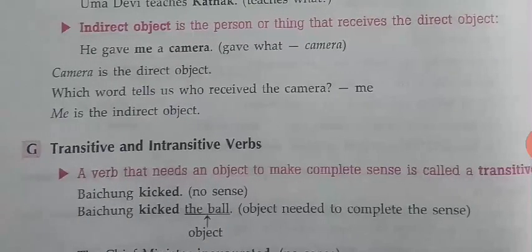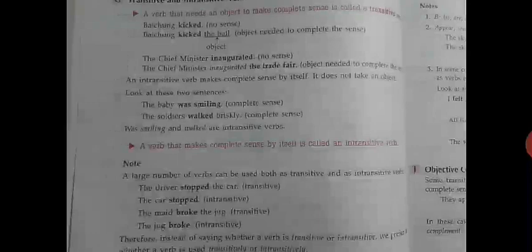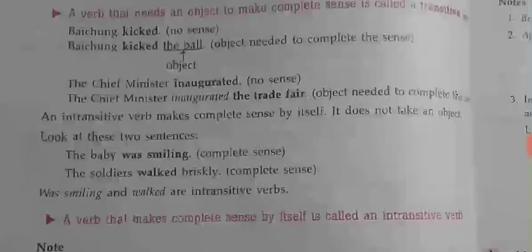'The Chief Minister inaugurated' — this makes no sense on its own. An object is needed to complete the sense. So when an object is needed to make complete sense of the sentence, the verb is called a transitive verb.